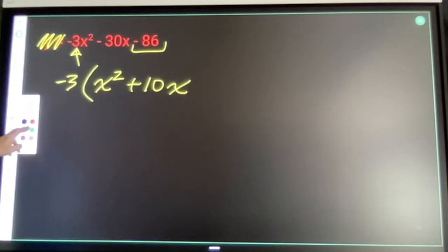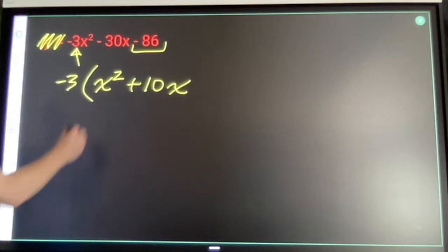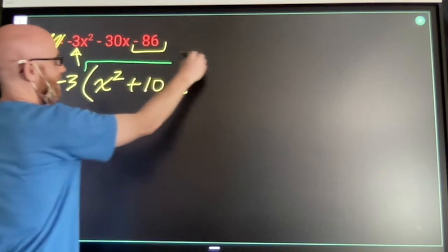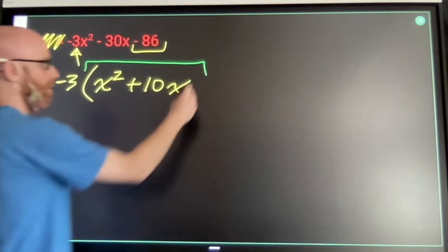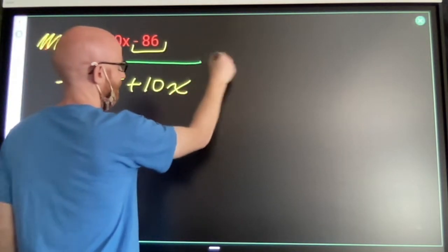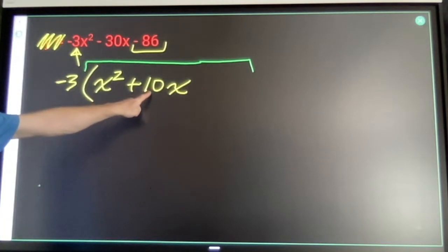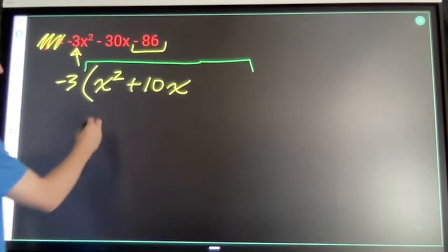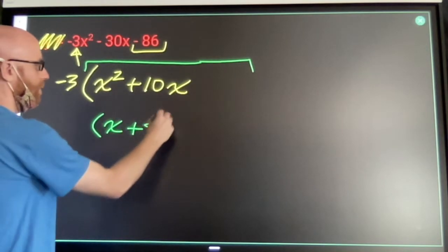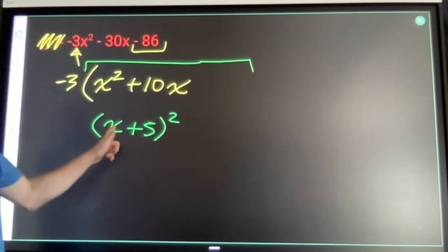Divide out this negative 3. Second move, I want this to be a perfect square. So if I've got 10x's here, in order to get them, I need to have an x plus 5 squared.